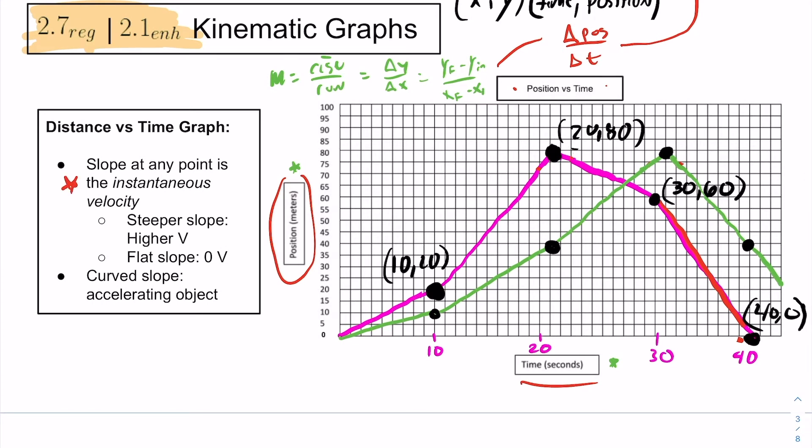If you have a steep slope, then you have higher velocity. So, let's just take a look at this one very quickly. Which one of these sections on this green position versus time graph has the highest slope? Go ahead and put what you think. All right. Steepest slope, number four.